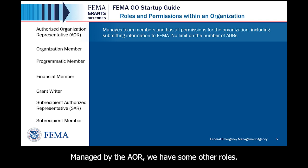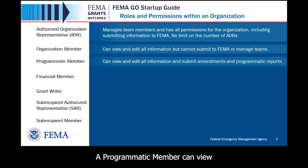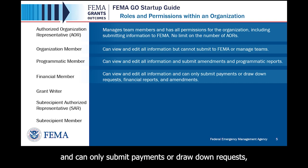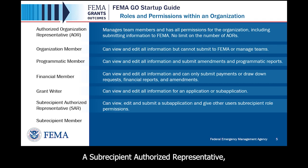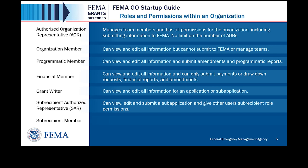Managed by the AOR, there are other roles. An organization member can view and edit all information, but cannot submit to FEMA or manage teams. A programmatic member can view and edit all information, and submit amendments and programmatic reports. A financial member can view and edit all information and can only submit payments or drawdown requests, financial reports, and amendments. A grant writer can view and edit all information for an application or subapplication. A subrecipient Authorized Representative, also known as an SAR, can view, edit, and submit a subapplication and give other users subrecipient role permissions. A subrecipient member can view and edit a subapplication.